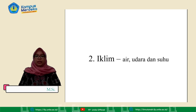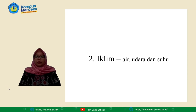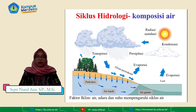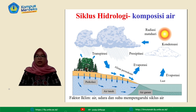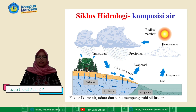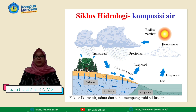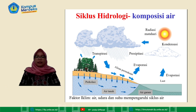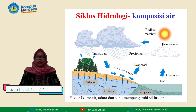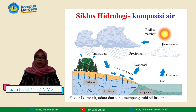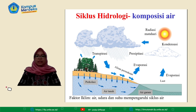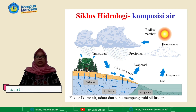Faktor pembentuk tanah yang kedua yaitu iklim. Iklim ini terdiri dari air, udara, dan suhu. Faktor iklim yang terdiri dari air, udara, dan suhu akan mempengaruhi siklus air. Di dalam siklus hidrologi, dimulai dari evaporasi yang terjadi di daratan maupun di lautan. Kemudian dari evaporasi tersebut akan terjadi kondensasi dan akan terjadi presipitasi. Dari presipitasi tersebut atau curah hujan, air sebagian akan terperkolasi ke dalam tanah menjadi air tanah, dan sebagian lagi terjadi runoff.